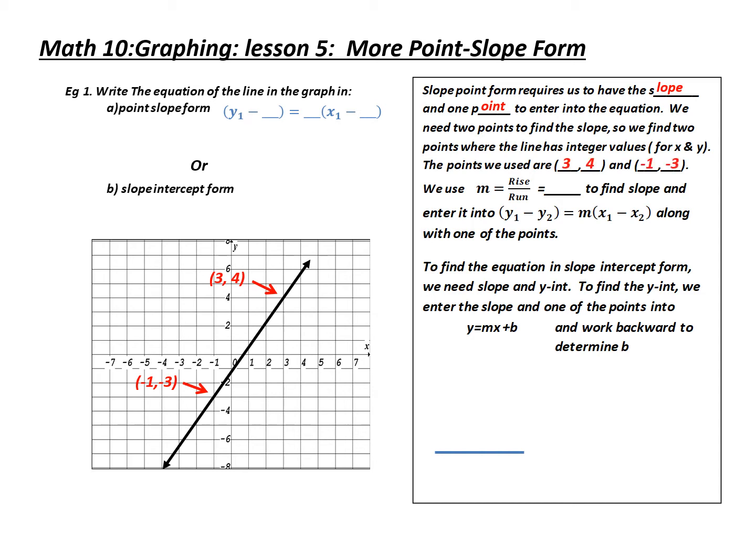At this point, I can now find the slope. I can use the slope formula of rise over run versus the coordinate formula because I'm given a graph. So going from negative three to four, I would go up seven. My run is going to be from negative one to three, which is over four. Therefore, my slope is rise over run or 7/4.